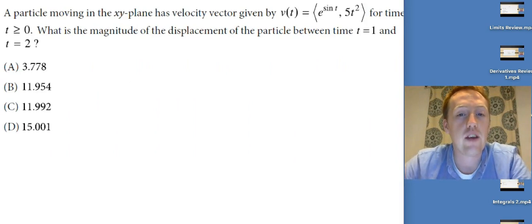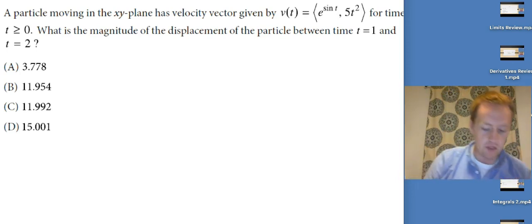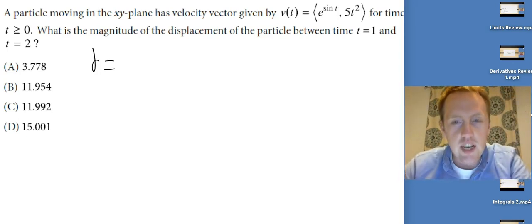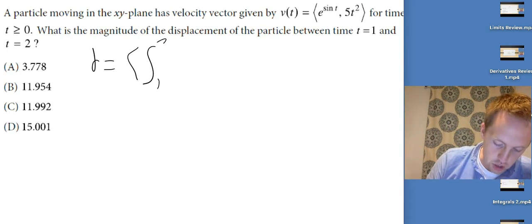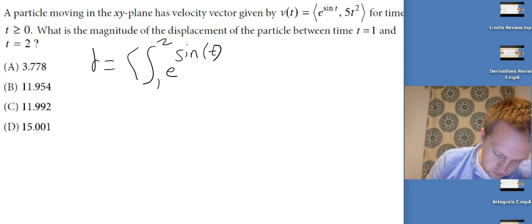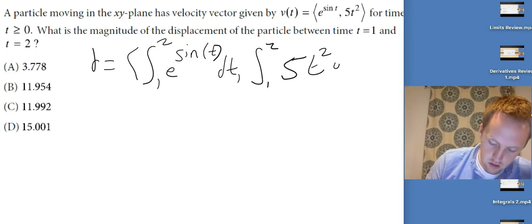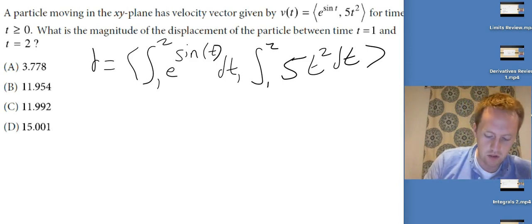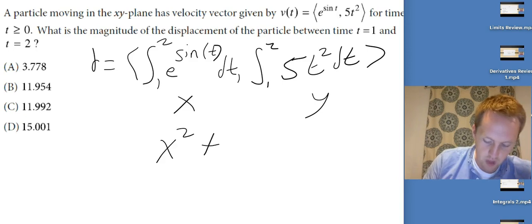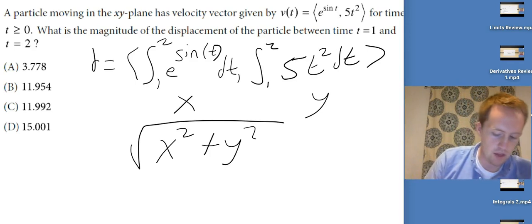A particle moving in the xy-plane has velocity vector v(t). For t ≥ 0, what is the magnitude of the displacement between t = 1 and t = 2? First find the displacement vector by integrating: d = (integral from 1 to 2 of e^(sin t) dt, integral from 1 to 2 of 5t² dt). Then to get magnitude, use the Pythagorean theorem — square each component, add, and take the square root. You end up getting 11.954.